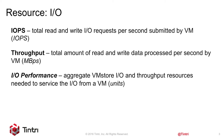Throughput is the total amount of read and write data processed per second by the virtual machine, expressed in megabytes per second. The third metric, IO performance, is a synthesized metric representing the aggregate VM store IO and throughput resources needed to service the IO from a virtual machine, expressed in basic units. When referring to IO in the app, we usually use the IO performance metric as it best captures the overall IO performance.